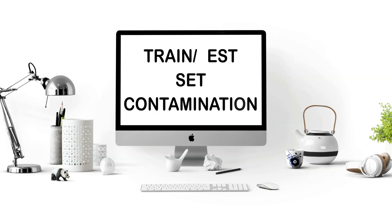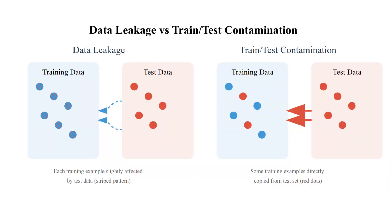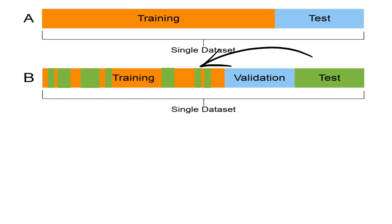Train-test set contamination. A quick differentiation between contamination and leakage: data leakage is when test or validation information subtly influences training through indirect means, like scaling features using statistics from all data, or extracting features using information from future timestamps.